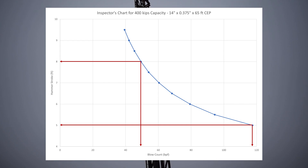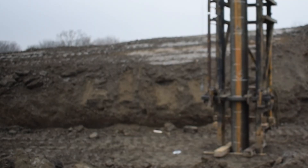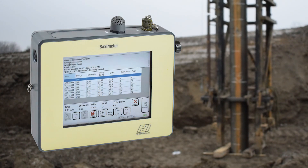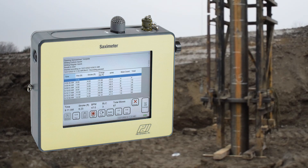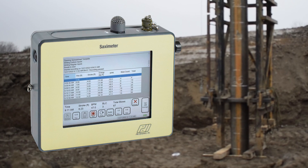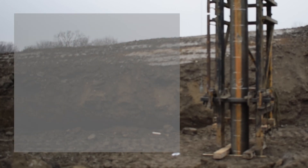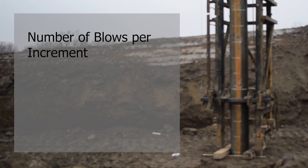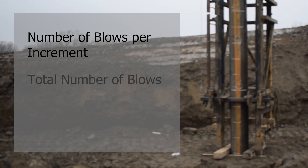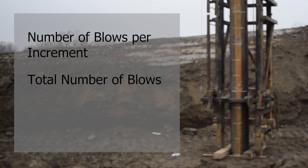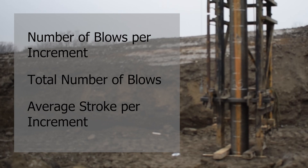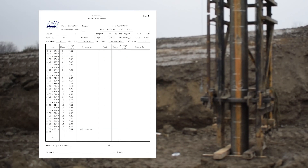This shows the importance of monitoring driving resistance and hammer performance. The SACSQ unit, produced by Pile Dynamics, allows for automation of impact detection and hammer stroke calculation. This enables an inspector to create a drive log that automatically tallies the number of blows for a given increment, the total number of blows applied to the pile, the average stroke of the hammer over a given increment, and the automatic creation of a finished drive log.